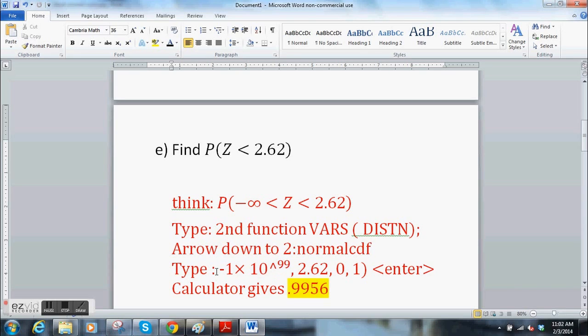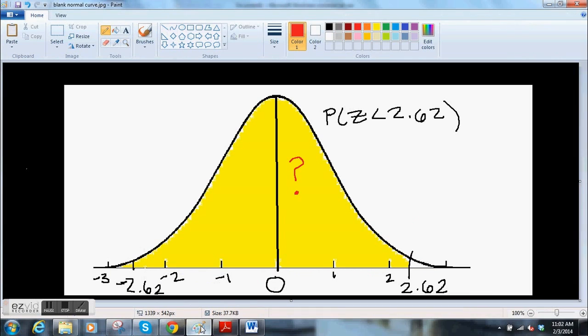So what you're doing, you arrow down here. When you come to typing, you hit negative 1 times 10 raised to the button 99. Comma. 2.62. Comma. 0. Comma. 1. Close the parenthesis. Just a regular one. Don't do a bracket. Hit enter. And your calculator gives you 0.9956. So we know this area here is equal to 0.9956. Great. Love it.